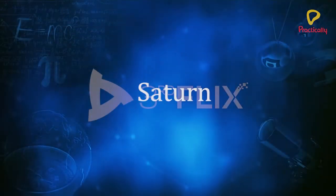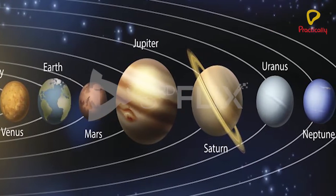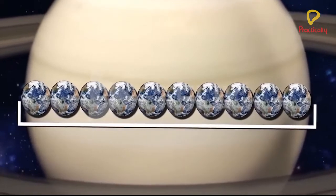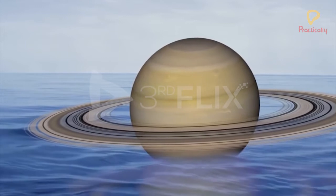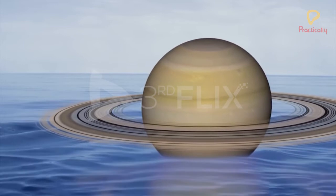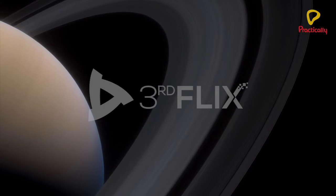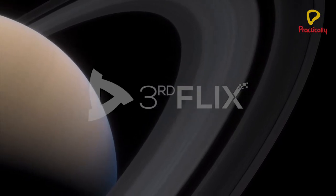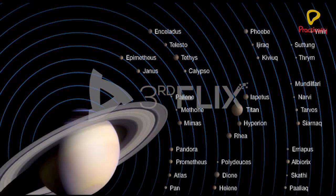Saturn. Saturn is the second largest planet among the eight planets. It is about 10 times wider than the Earth. Despite its huge size, Saturn is the lightest planet, with a density less than water. Saturn appears yellowish in color and has a collection of beautiful rings that can be seen through a telescope. Saturn has 82 satellites, which is the highest number among all eight planets.